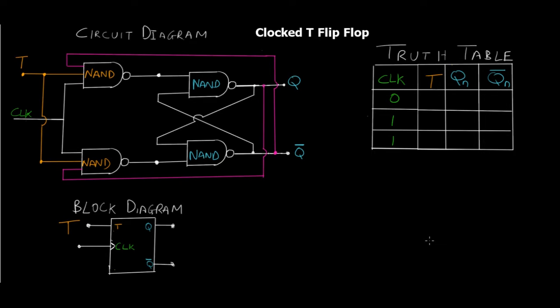The clocked T flip-flop is one more variation of flip-flops. T stands for toggle flip-flop, which especially gives us the toggle functionality. This flip-flop is essentially only used for toggling purposes because the truth table enables only that feature and one more state — the previous state. It does not have a lot of states, and we'll see that in the truth table. Let's start off with the circuit diagram.